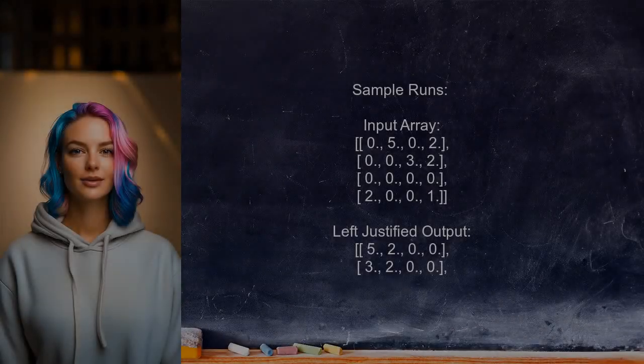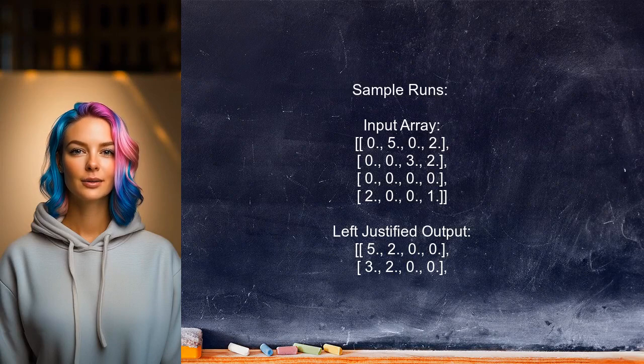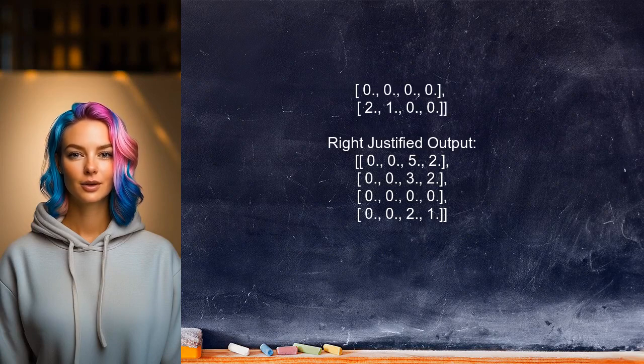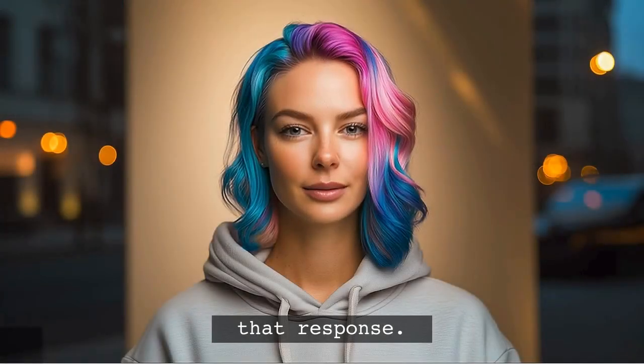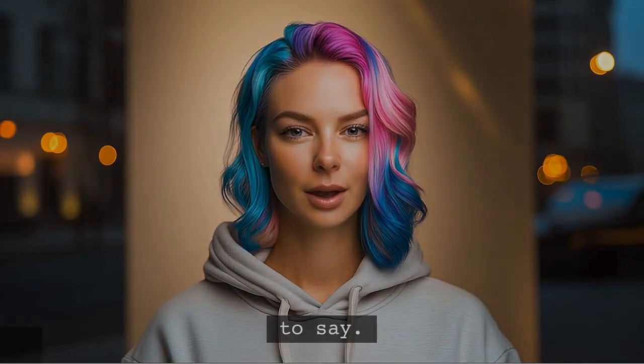The user also provides sample runs demonstrating the function. For left justification, the output array shows non-zero elements shifted to the left, while for right justification, they are shifted to the right. That's all for that response. Let's see what someone else had to say.